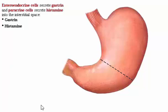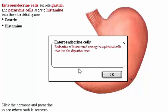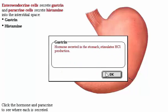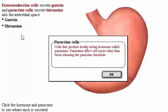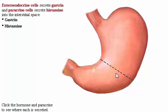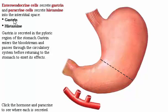Enteroendocrine cells secrete gastrin and paracrine cells secrete histamine into the interstitial space. Gastrin is secreted in the pyloric region of the stomach, enters the bloodstream, and passes through the circulatory system before returning to the stomach to exert its effects.